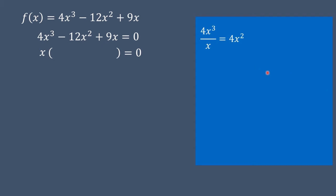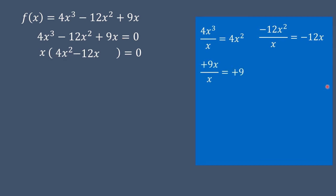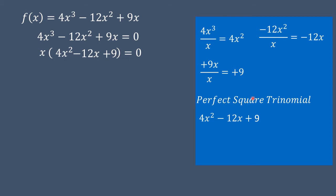Dividing each term by x: 4x³ ÷ x = 4x², negative 12x² ÷ x = negative 12x, and positive 9x ÷ x = positive 9. So we have x(4x² - 12x + 9) = 0. The trinomial 4x² - 12x + 9 is still factorable.